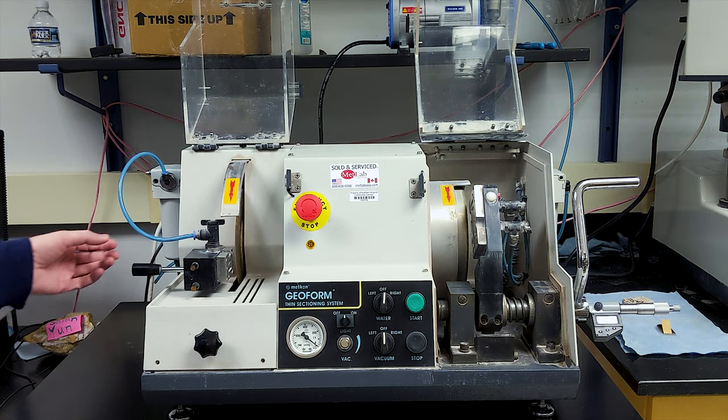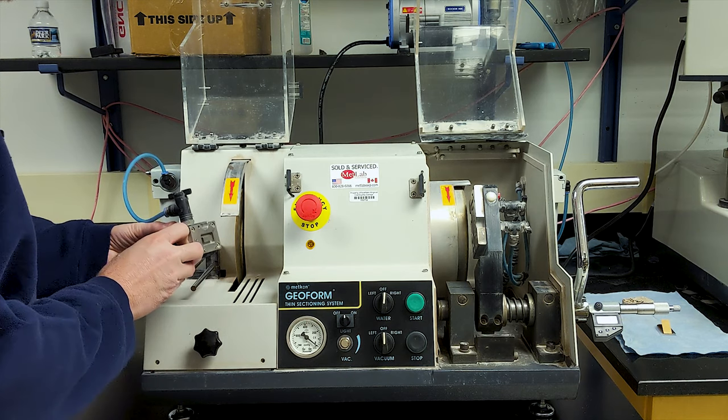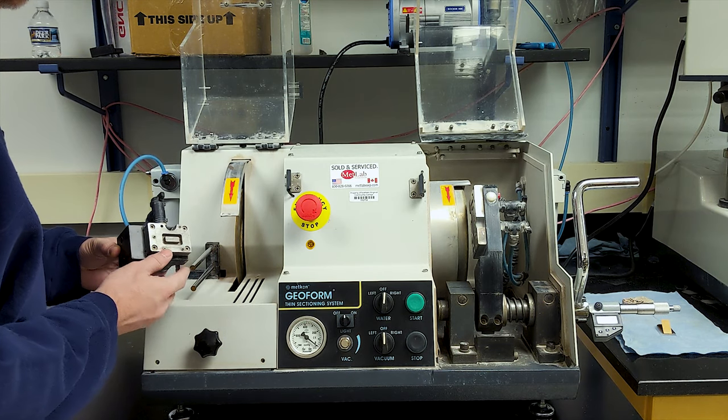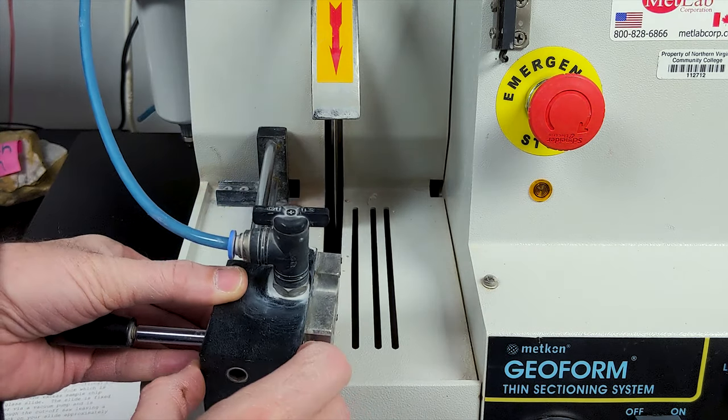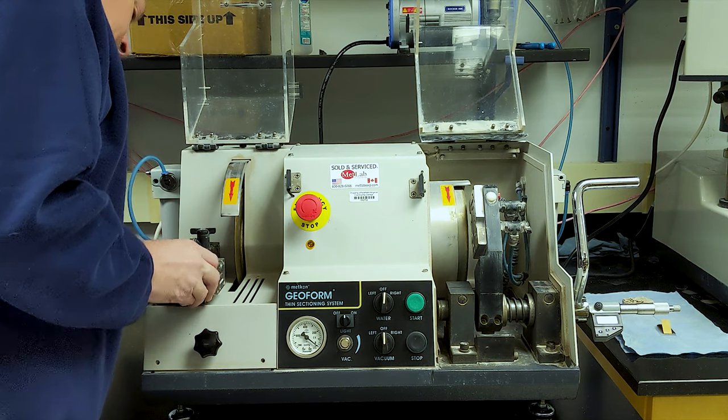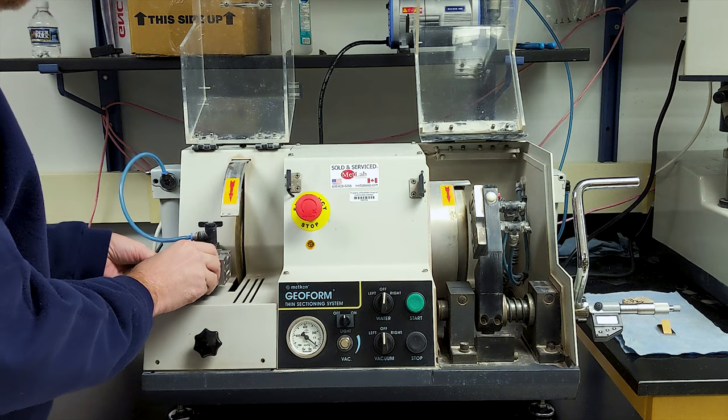The GeoForm has two primary functions. On the left is the cutting module, which is used to cut off the excess sample chip from the glass slide. The slide is fixed on a holder via a vacuum pump and is pushed through the cutoff saw, leaving a layer of rock on your slide approximately two millimeters thick.